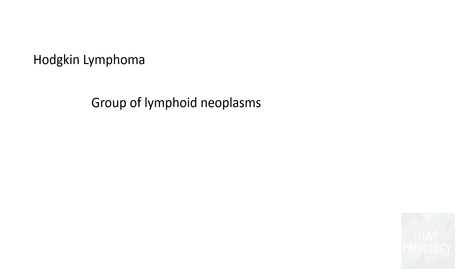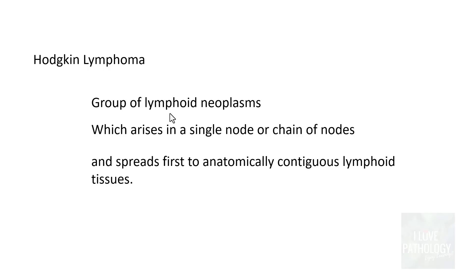What is Hodgkin Lymphoma? By definition, these are a group of lymphoid neoplasms — lymphoid meaning any tissue or cell that forms part of the lymphatic system, which plays a major role in immune or immunological function. Hodgkin Lymphoma is a group of lymphoid neoplasms which arises in a single lymph node or chain of lymph nodes and spreads first to anatomically contiguous lymphoid tissue.